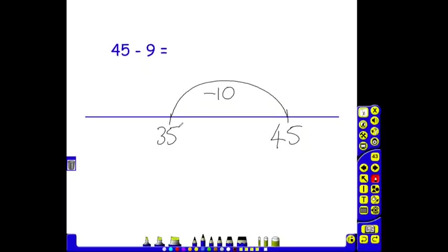We've taken away 10. We only needed to take away 9. So we've taken away 1 extra. We've now got to add that extra 1 back on. So 35 add that extra 1 gives us 36. So 45 take away 9 is 36.